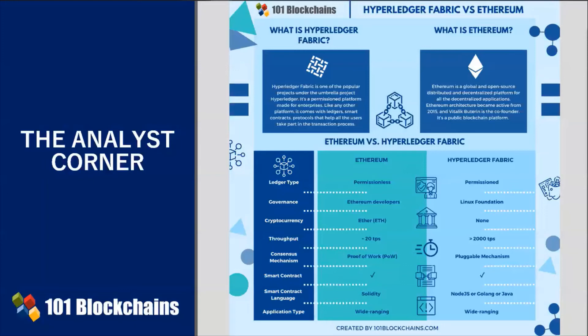From a use case perspective, Ethereum is mostly popular for decentralized applications, which is why there are thousands of applications built on top of it. Hyperledger Fabric, on the other hand, is fairly new and has a more limited number of use case applications compared with Ethereum.